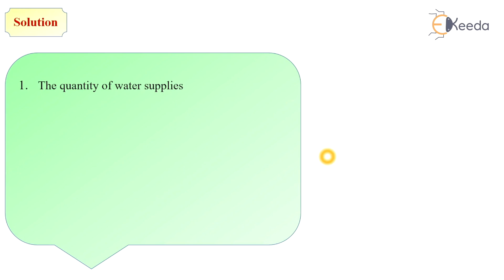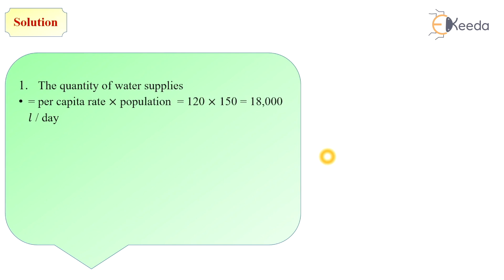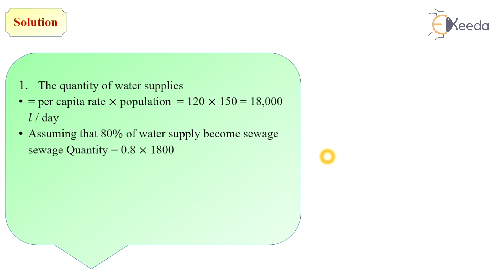In the problem statement we have the value of water supply rate and number of population. From these two values, first we find the quantity of sewage flow. The quantity of water supply is equal to per capita water supply rate into population: 120 into 150 equals 18,000 liters per day. Generally we assume 80 percent of water supply becomes sewage, so sewage quantity equals 0.8 into 18,000, which is 14,400 liters per day.